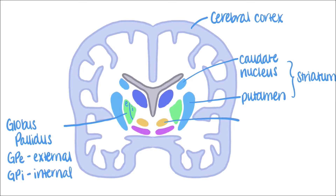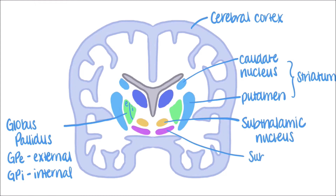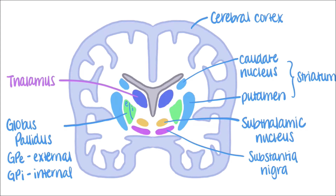Near the bottom, we have the subthalamic nucleus, represented by the yellow blob, and substantia nigra, represented by the magenta region. The thalamus is another important structure in these two pathways, but it is not part of the basal ganglia.